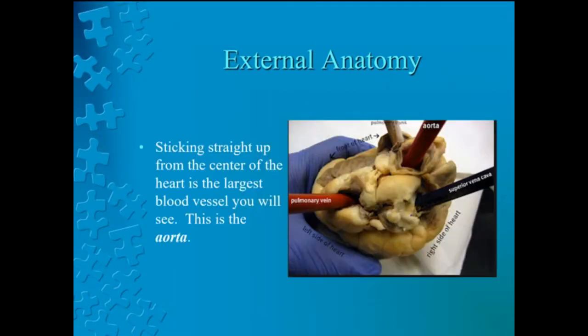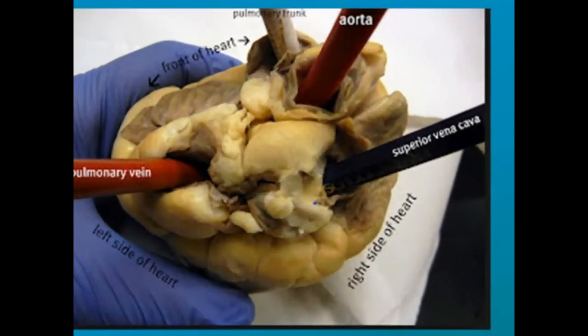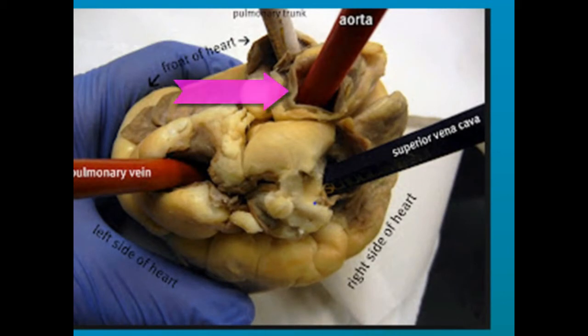Just behind and to the left of the aorta, there is another large vessel called the pulmonary artery. The pulmonary artery takes blood from the right ventricle to the lungs. Notice in the picture that the left atrium is on the left side — this means that the side of the heart facing you would be the dorsal, or back, side. Pause to locate the pulmonary artery.